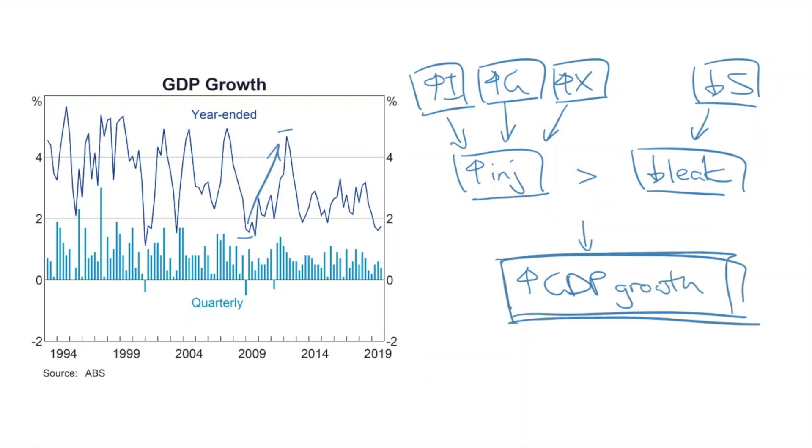Subsequent movements in economic activity can also be explained by movements in the circular flow of income. At the time of recording, we're in the middle of social isolation due to the coronavirus. We haven't got the economic figures yet, but which components of the circular flow of income do you think are affected? How is the government sector responding? How is the RBA responding? Get into a habit of paying attention to these concepts in real life so that you can solidify your understanding.